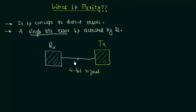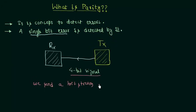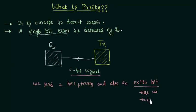So what is parity? Parity is actually an extra bit that we send with the bit stream. So we send a 4-bit signal and also an extra bit, and that extra bit tells us the total number of 1s in the transmitted signal. The use of this total number of 1s is something we have to cover by example.